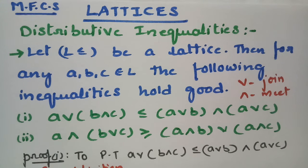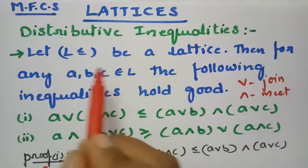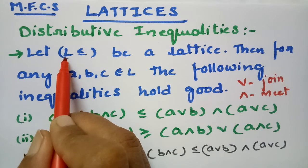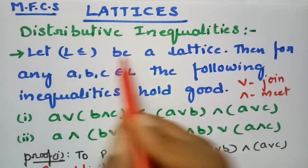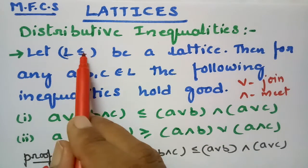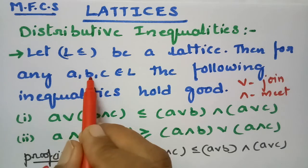In this video I am going to explain the properties of lattices. Today's property is the distributive inequality. This topic is related to the mathematical foundation for computer science. Let me explain the statement: let L be a finite set and ≤ be the operation on this finite set, making (L, ≤) a lattice.